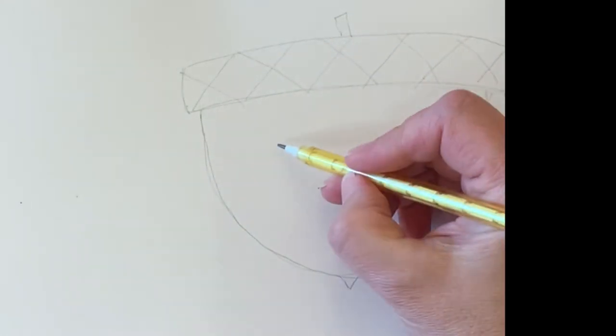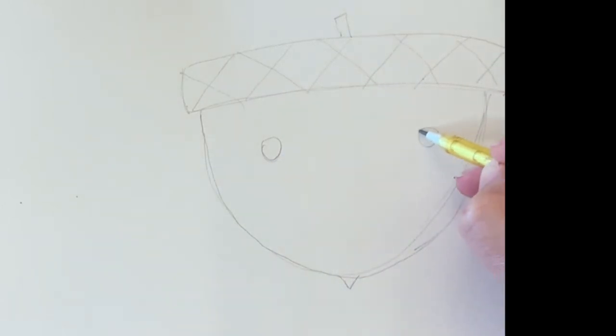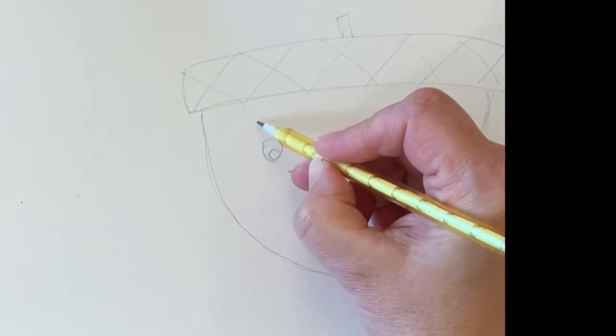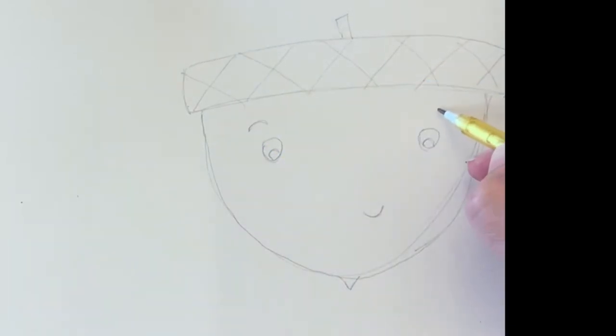Now I'm going to make a face in pencil on my acorn. Let's see. Oh, I like those cute little eyes I made. And some eyebrows on top. I decided no nose on this guy.